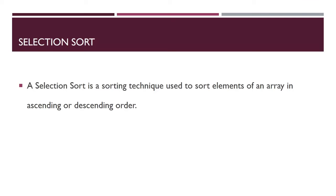What is selection sort? Selection sort is a sorting technique used to sort elements of an array in ascending or descending order. In this sorting technique we will find the smallest element from the array and place it in the first position of the array. After that we will take the second smallest number and place it in the second position. In this way we will sort the entire array in ascending order.